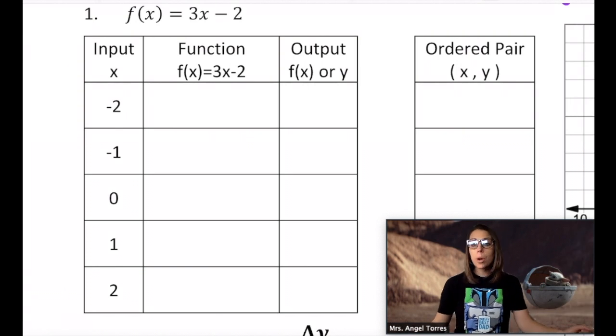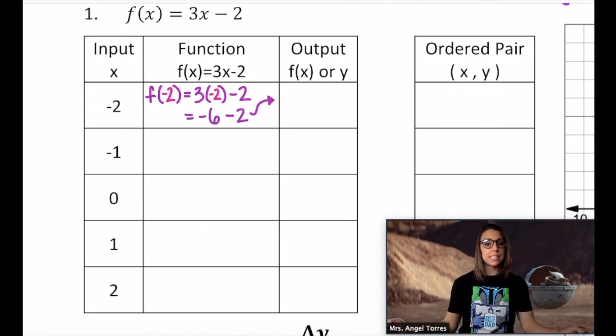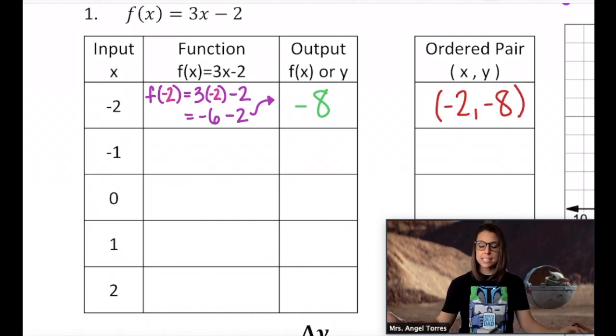So we're just going to evaluate this function, get our set of ordered pairs, and then graph them in the coordinate plane. When we're given an input x, we first start by writing out our function with that input. We're evaluating f(-2), and then substituting -2 into the function. So 3 times -2 is -6. -6 minus 2 gives us an output of -8. Now we can represent this relation in an ordered pair as (-2, -8). This basically means that when I inputted -2 into function f(x), my output was -8.